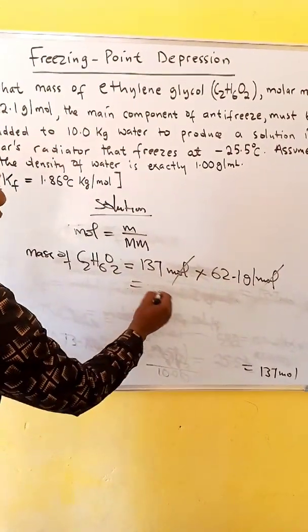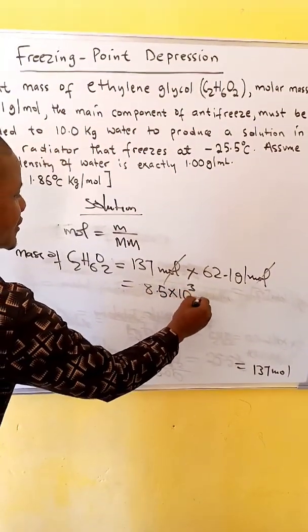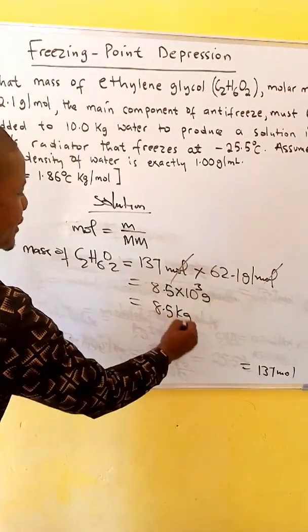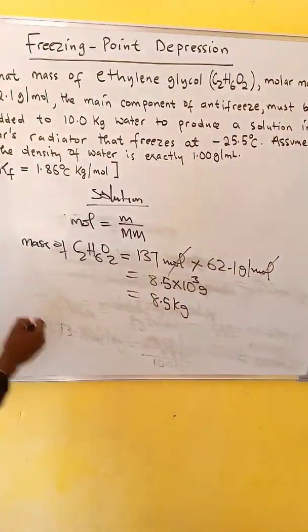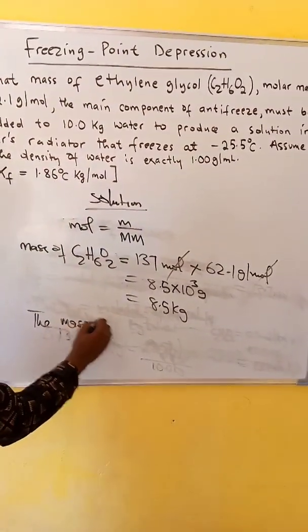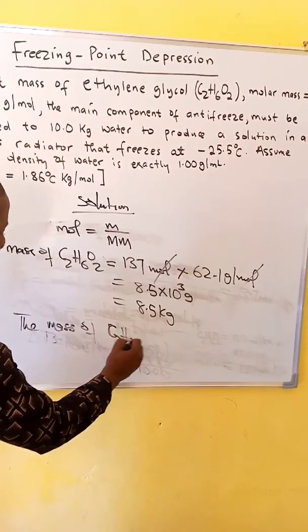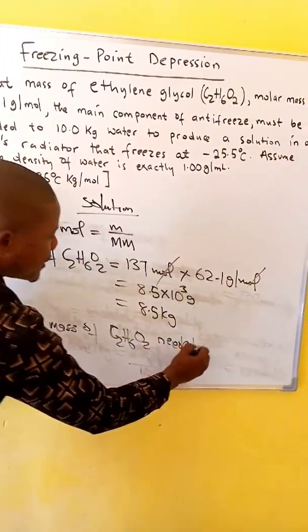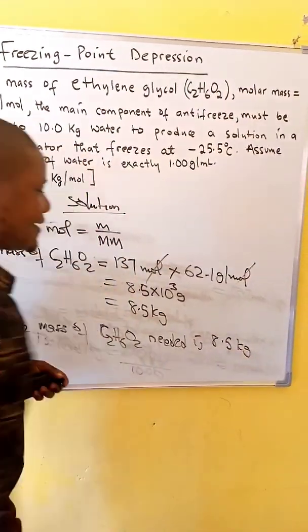We'll multiply. Then we'll get 8.5 times 10 to the power 3 grams, or rather, 8.5 kgs of ethylene glycol.